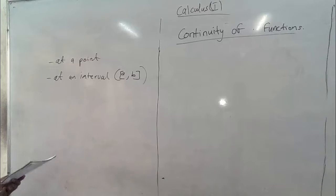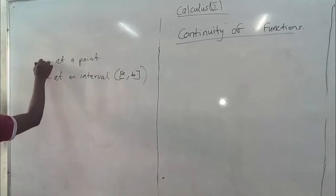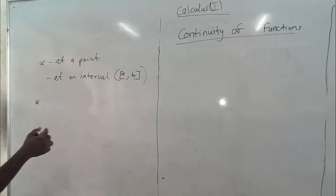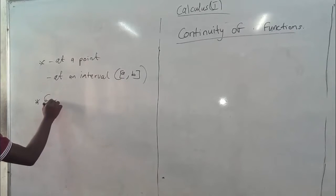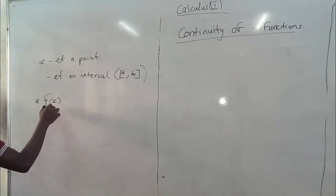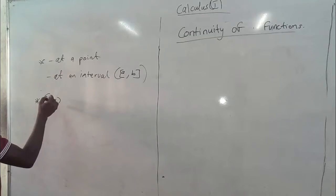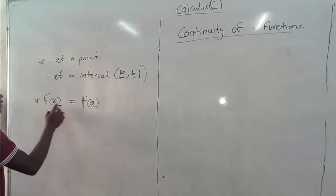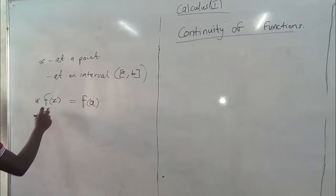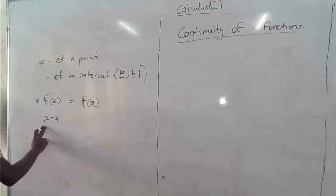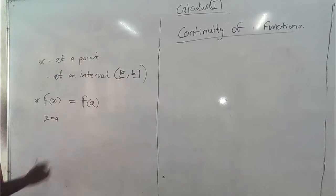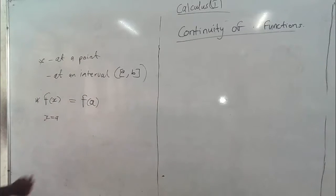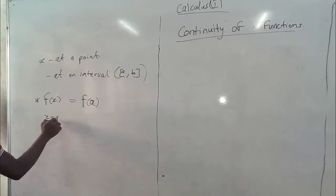Taking continuity at a point: we say that if a function f(x) is continuous at a point, as the function is approaching a value, let's say a, then f(a) should be equal to the limit of f(x). When you substitute a into x and get the same value for the function, we can say the graph is continuous at the point x equals a.